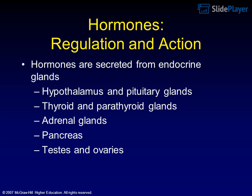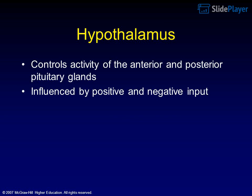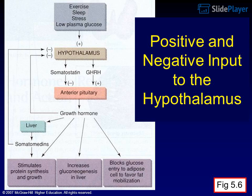Hormones are secreted from endocrine glands including the hypothalamus and pituitary glands, thyroid and parathyroid glands, adrenal glands, pancreas, and testes and ovaries. The hypothalamus controls activity of the anterior and posterior pituitary glands and is influenced by positive and negative input.